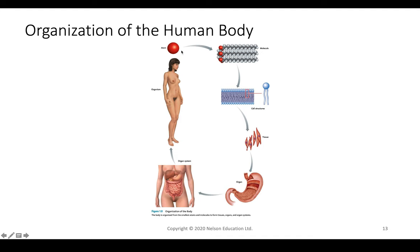At each of these levels, the whole is more than the sum of the parts. So this molecule is worth more than just the atoms that comprise it, and the cell structure is worth more than just the molecules that comprise it. As we get up in these levels of orders of complexity, we become more and more reliant on each other and interdependent. Every level that we go up in complexity, we also go up in dependence.